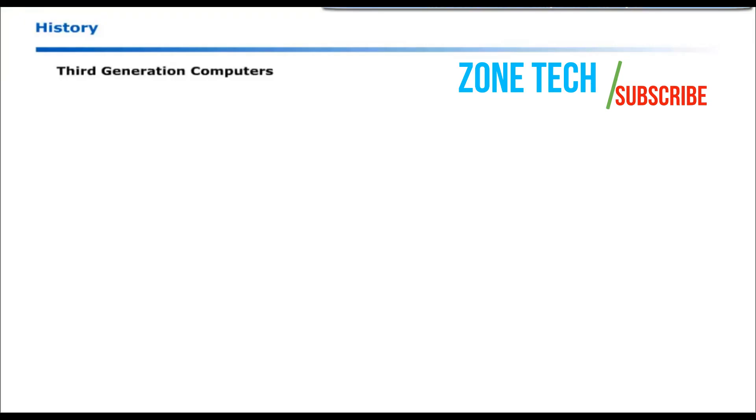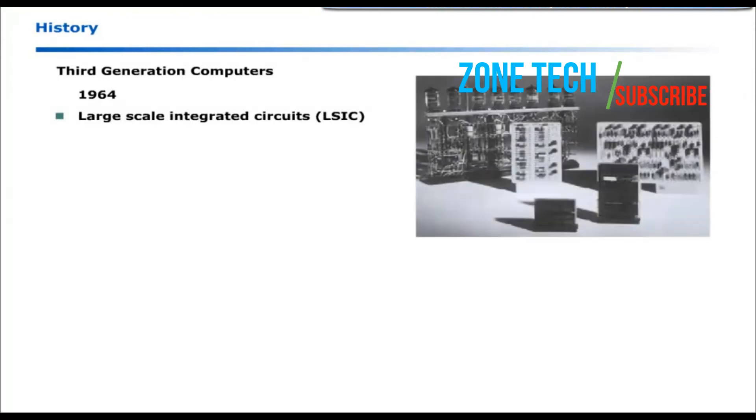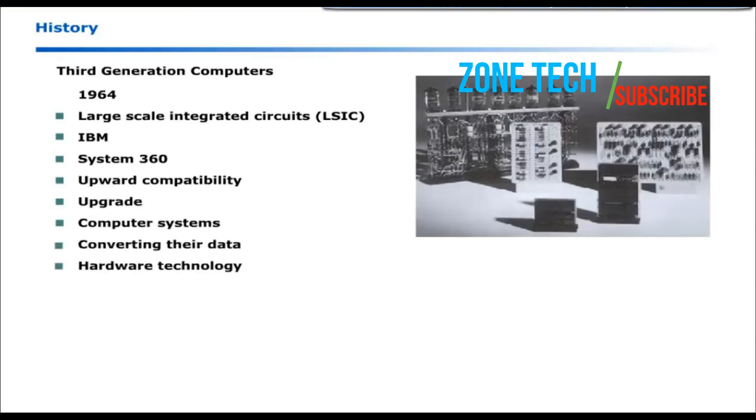Third generation computers were introduced during 1964. These computers used large scale integrated circuits. IBM developed System 360 with the idea of upward compatibility that allowed companies to upgrade their computer systems without converting their data.